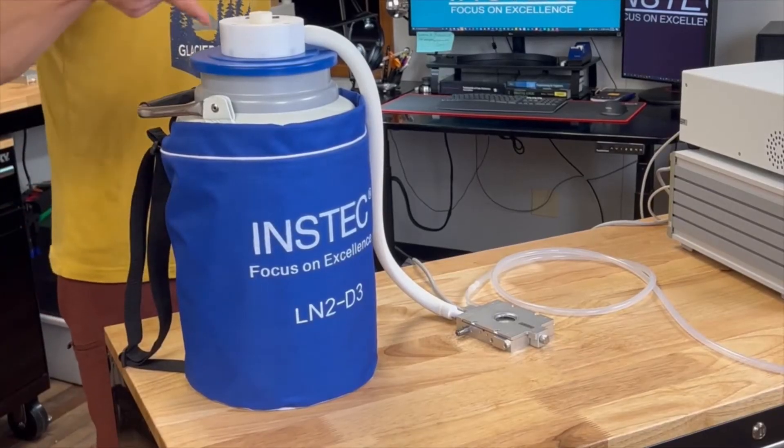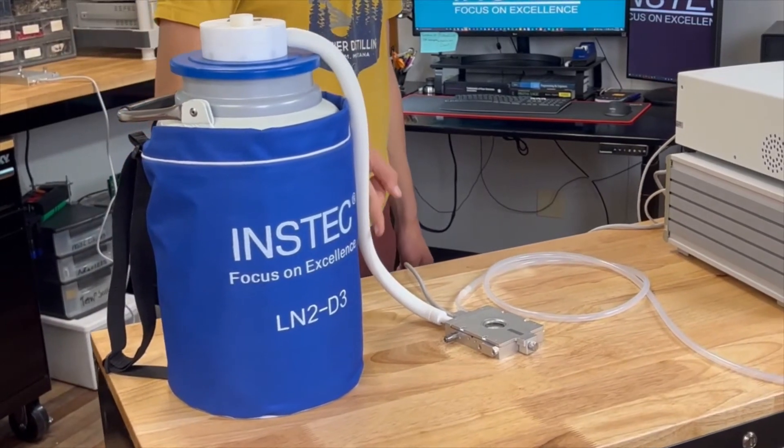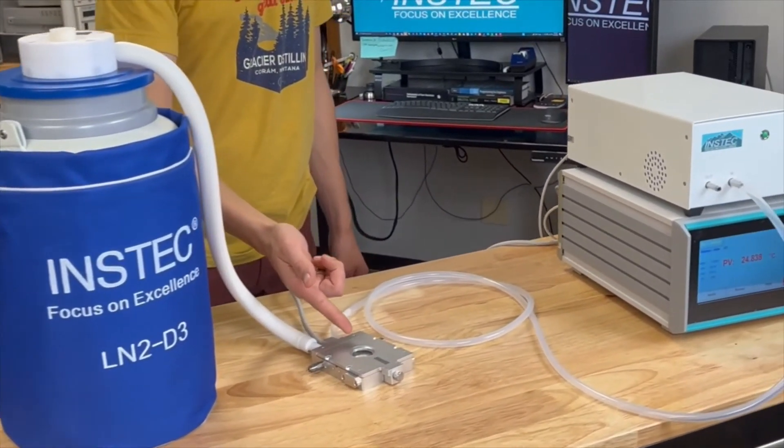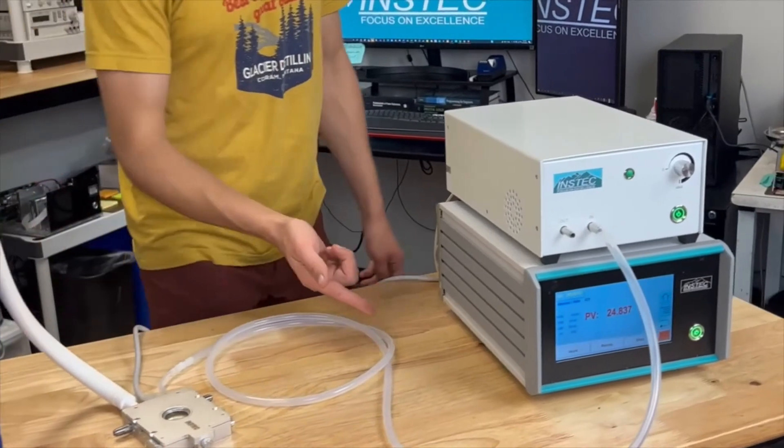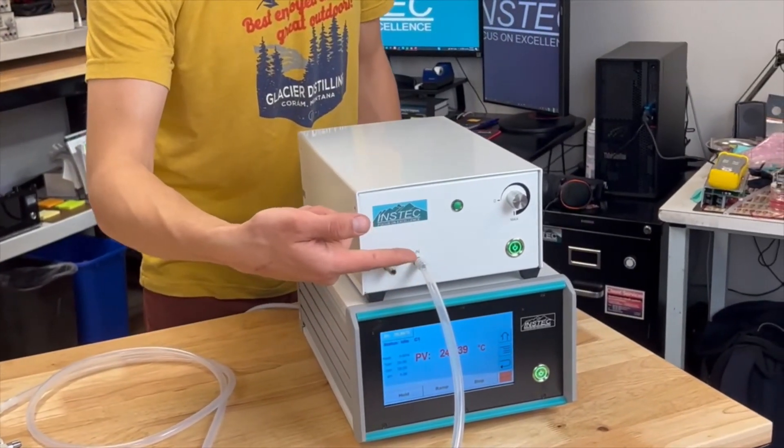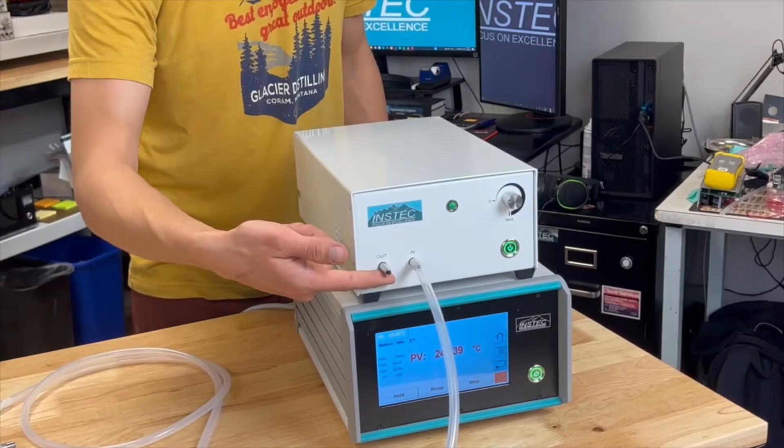The LN2 flow circuit begins at the insulated Dewar. It's pulled via negative pressure through the inlet tubing, into the sample area, through the outlet tubing, and to the LN2 suction pump. It is then heated and outputted as harmless N2 gas.